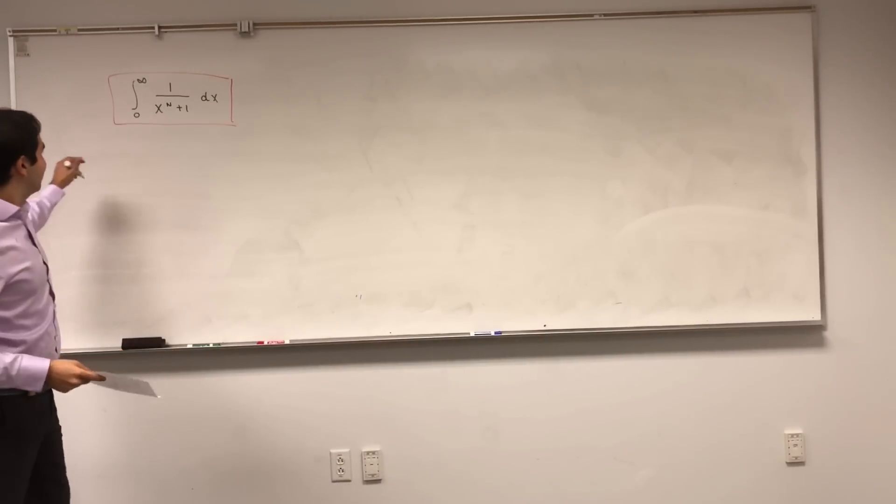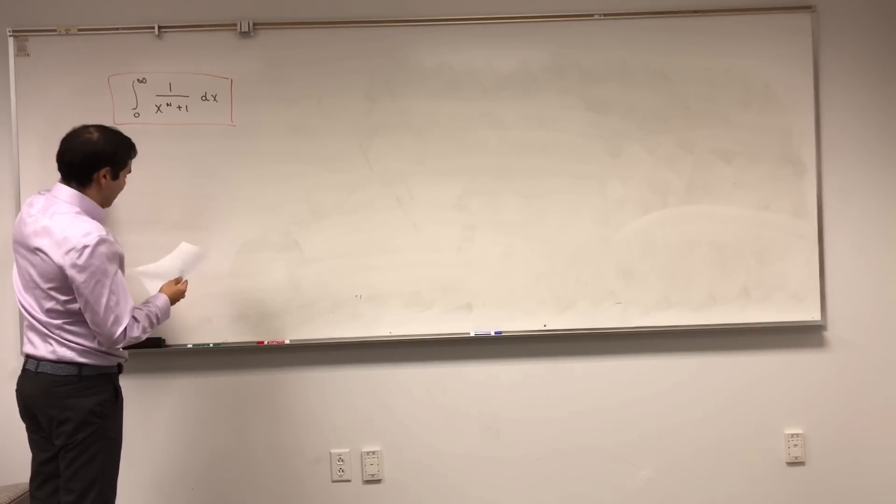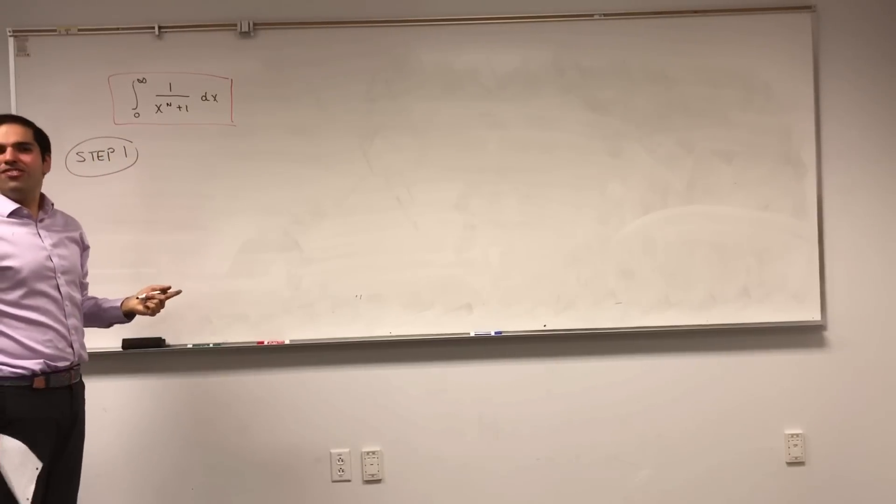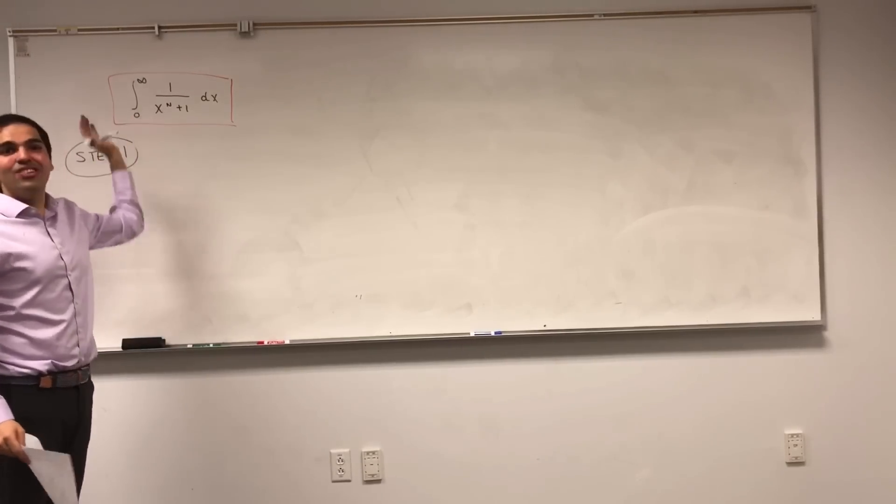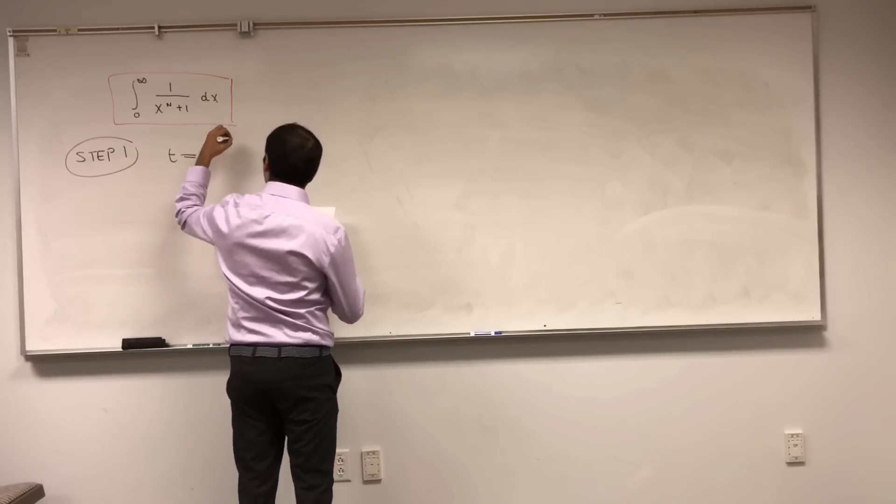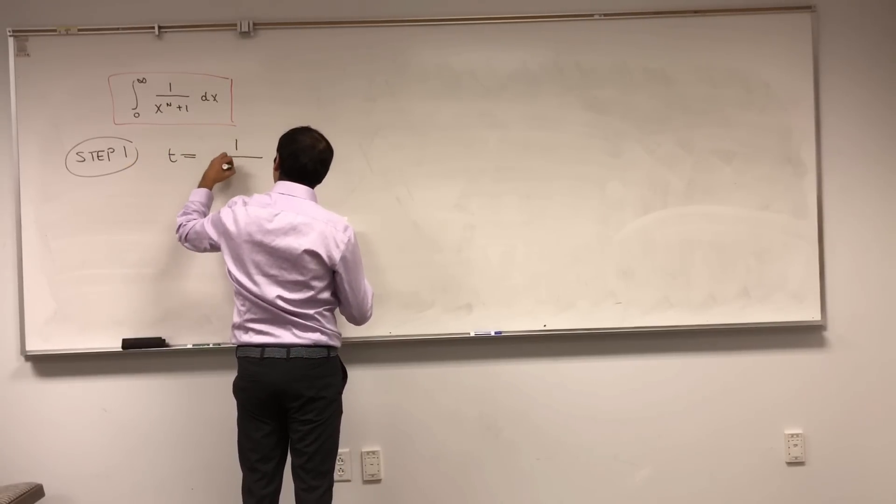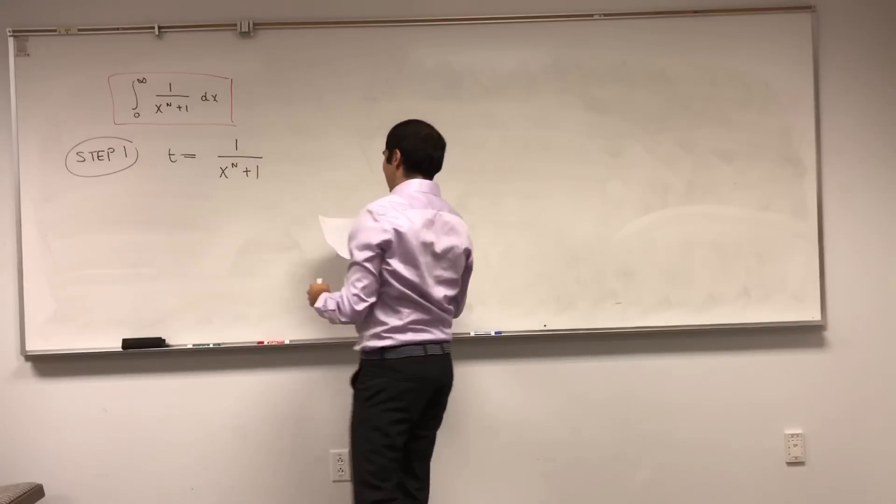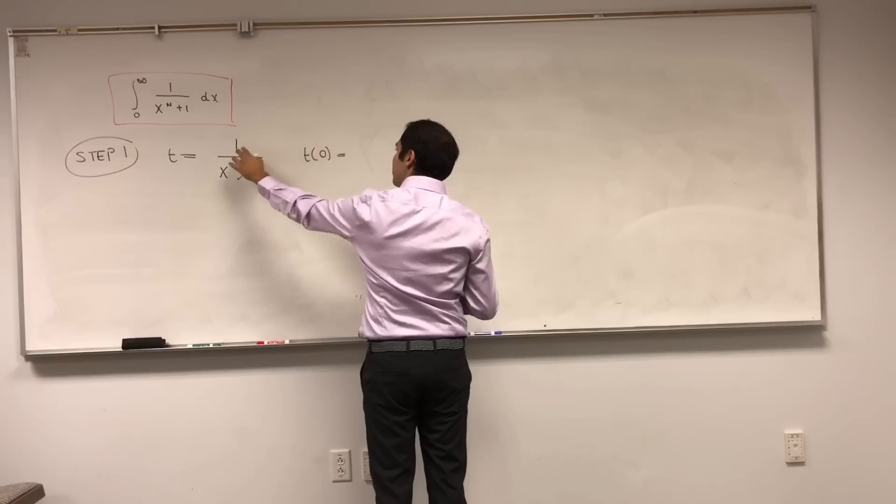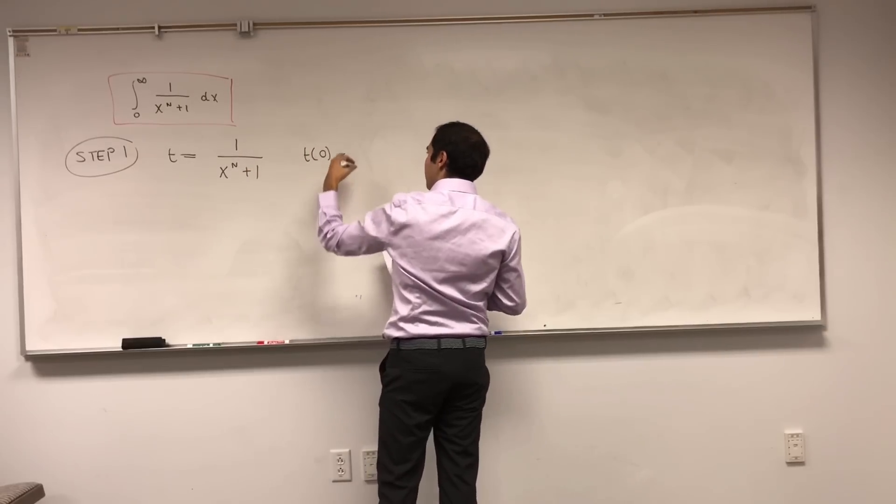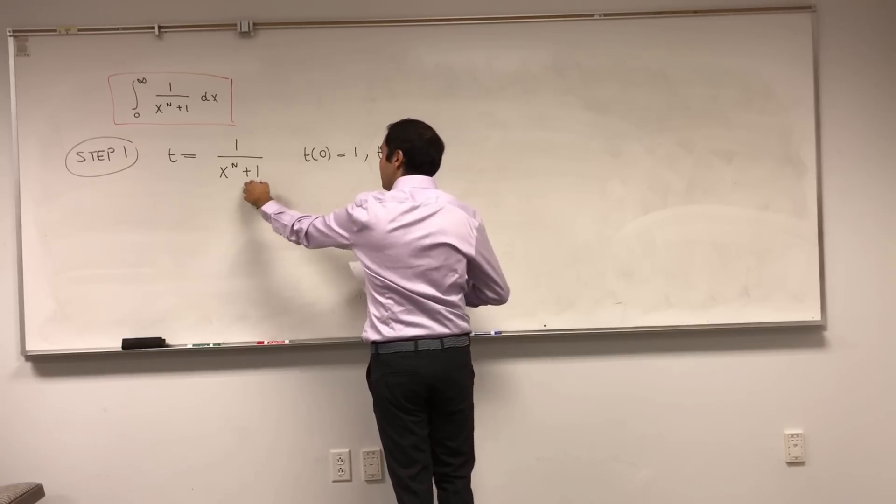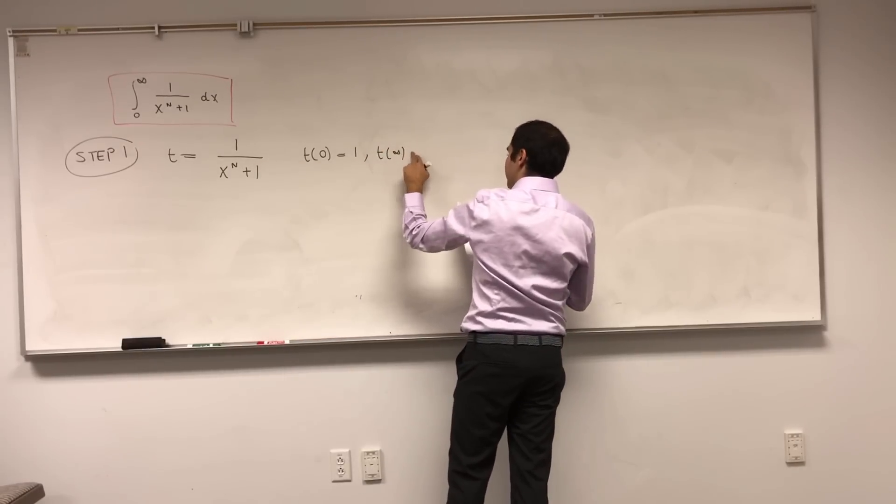So what's the clever way? Well, let's just use a substitution. We have no idea what substitution to use, so let's just do the whole thing. Let t be 1 over x to the n plus 1. Then t of 0 is 1 over 0 to the n plus 1, which is 1, and t of infinity is 1 over infinity plus 1, which is 0.